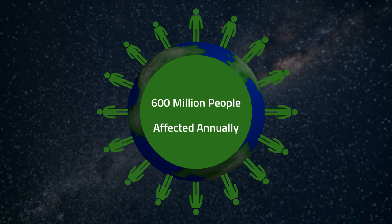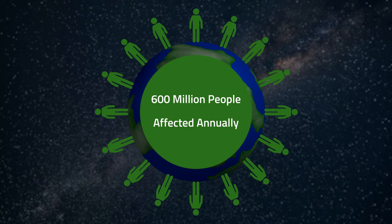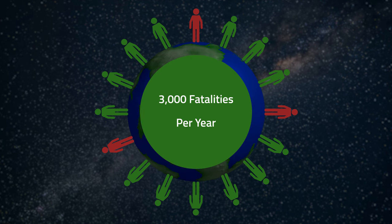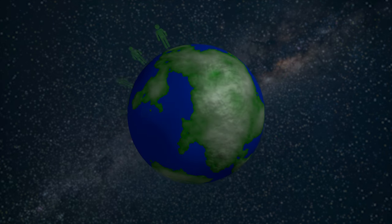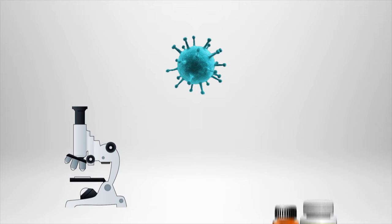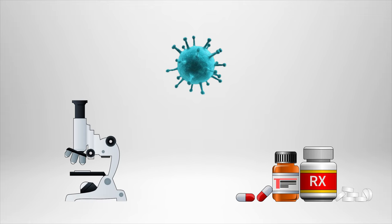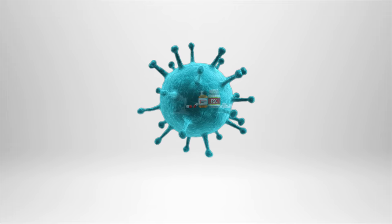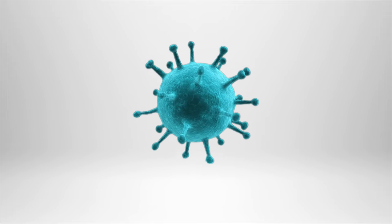600 million people suffer from food poisoning each year. For 3,000 of those people, it's fatal. Why is foodborne illness still so prevalent today, in spite of incredible advances in technology and medicine? The ironic fact is, it's that same advancement that has enabled foodborne illnesses to thrive.